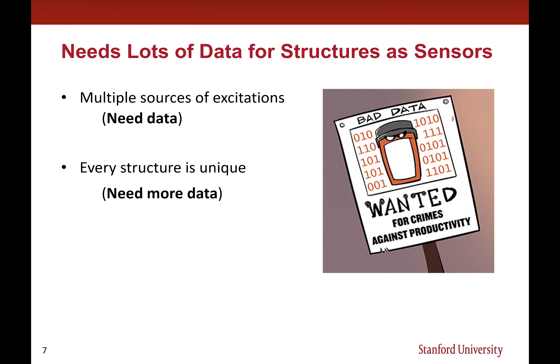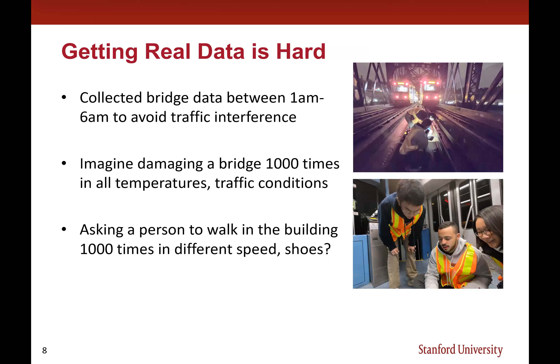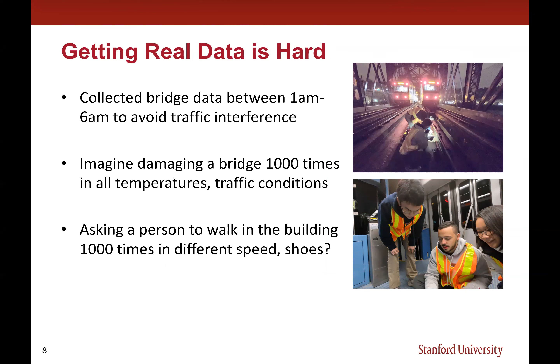We also learned that every structure is unique. Many are designed differently, constructed differently, and sit in different climate zones, eventually developing into a unique structure — requiring even more data. Additionally, many interesting events we want to detect, like critical structural damage or critical events affecting human quality of life, are rarely occurring. To collect enough instances, we need seriously more data. But collecting real-world data is very hard and expensive.